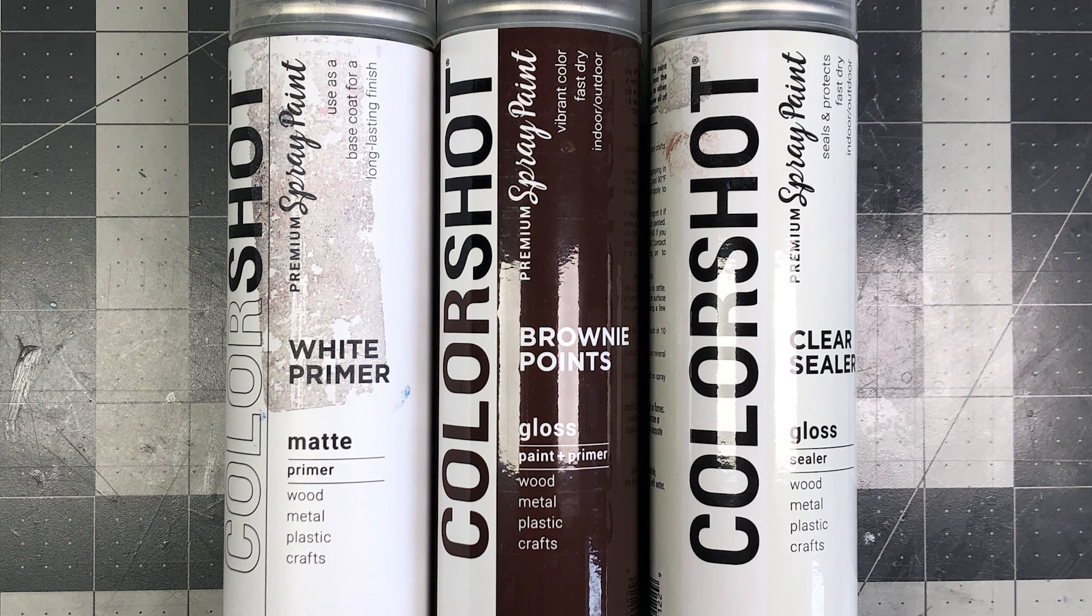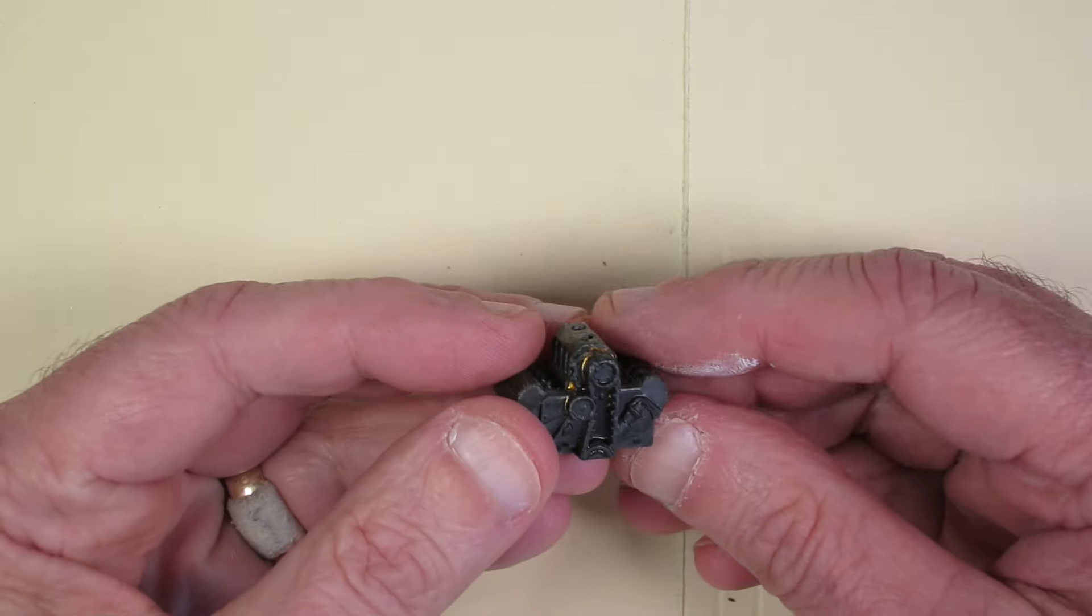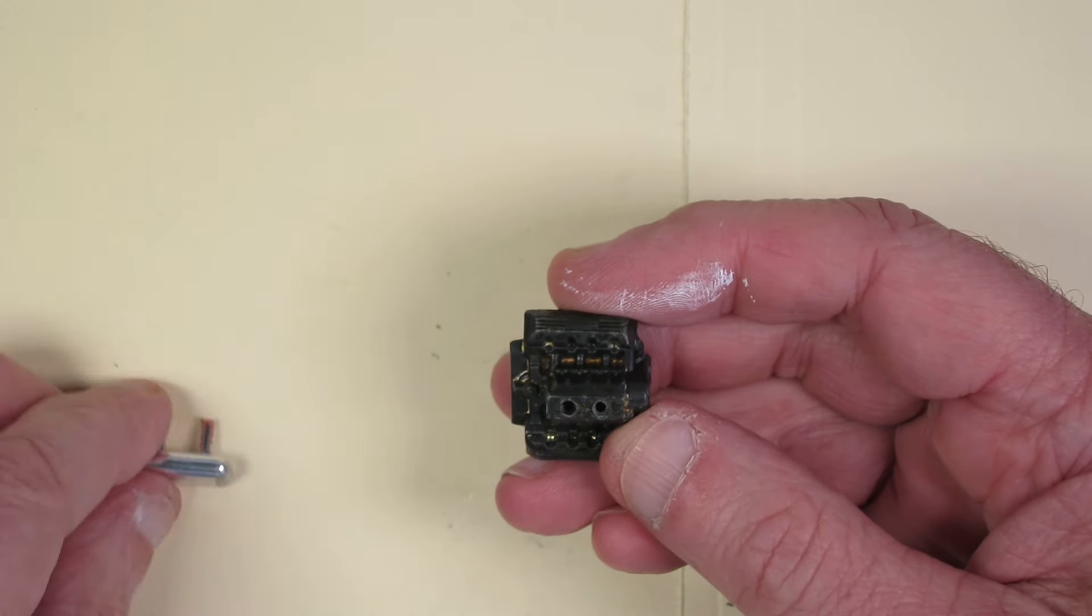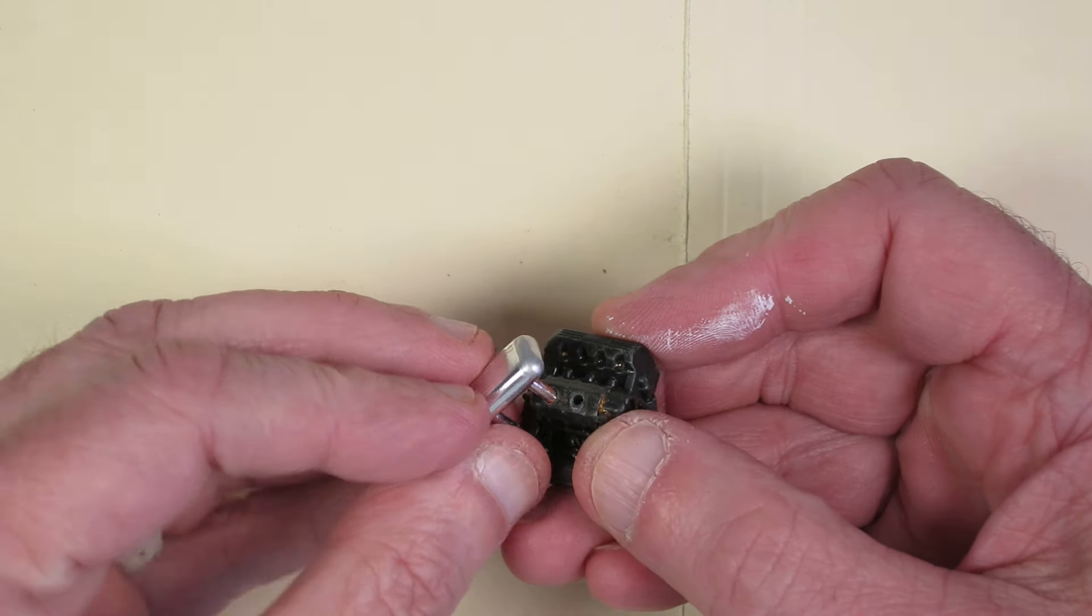To paint, I ended up using the color shot paints again. And I use the white primer from color shot. I use brownie points brown, and then went over it once the decals are on with that clear sealer. I'm thrilled with these paints, to be honest with you.